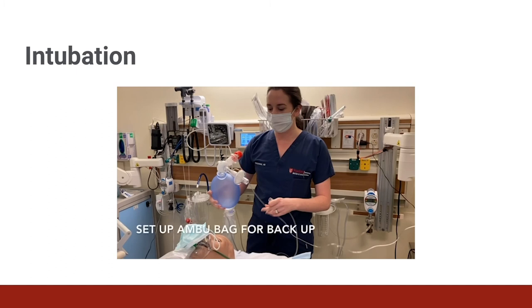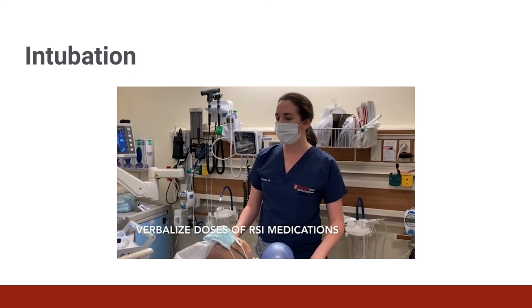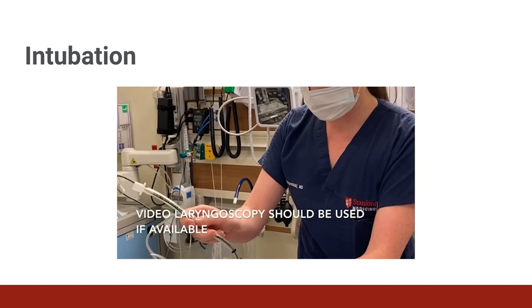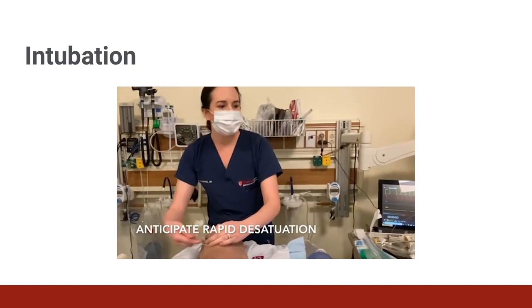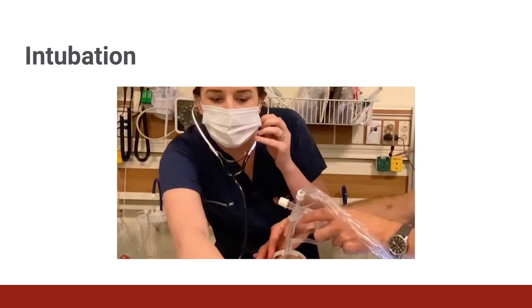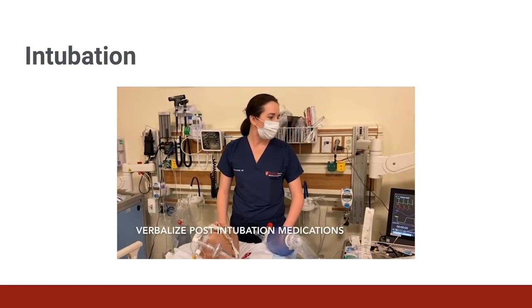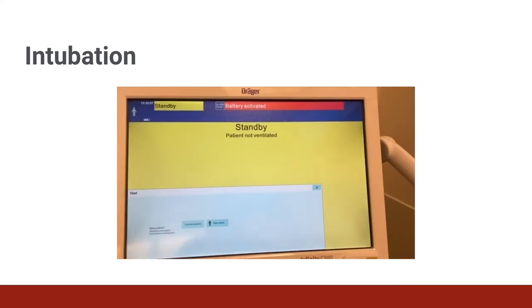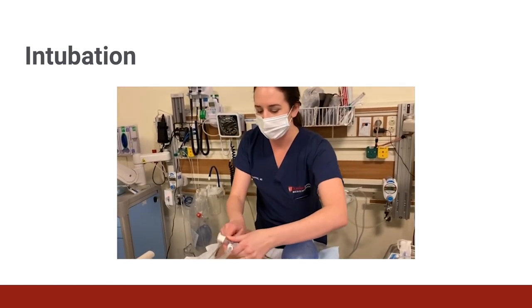First, initiate your pre-oxygenation. Then be sure to position the patient appropriately. Call a timeout before you begin the procedure. It's important to verbalize your dosing of your RSI medications — this topic will be addressed in our next video. Anticipate desaturation and have the most experienced provider perform the intubation procedure. Connect the ET tube directly to the ventilator and confirm placement listening to breath sounds bilaterally. Then verbalize your post-intubation sedation plan. In the event of ventilator failure or desaturation, be prepared to use the ambu bag with the viral filter to bag through the endotracheal tube.